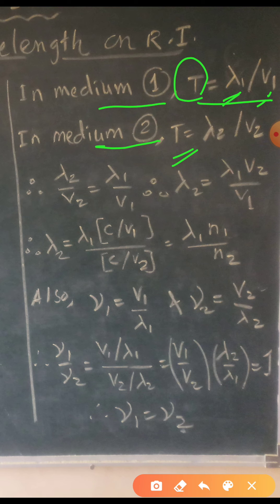Now, since capital T is equal to lambda 1 upon V1, and again capital T is equal to lambda 2 upon V2, these two are equal. Therefore, lambda 2 upon V2 is equal to lambda 1 upon V1. Rearranging, we get lambda 2 is equal to lambda 1 times V2 upon V1.